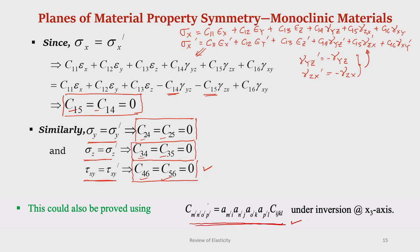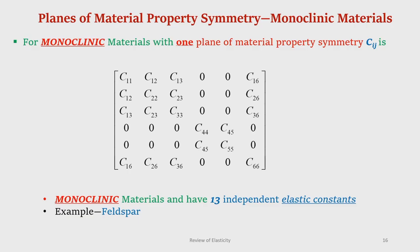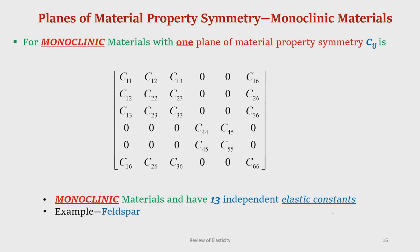Existence of one plane of material property symmetry leads to 8 of the 21 independent elastic constants becoming zero. A material with one plane of material property symmetry is known as a monoclinic material. For a monoclinic material the stiffness matrix consists of only 13 independent elastic constants, and the compliance matrix also has 13 independent terms. An example of a monoclinic material is feldspar.